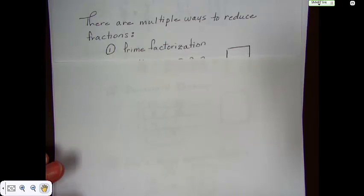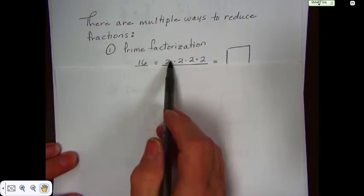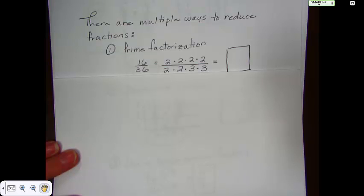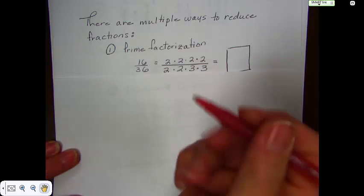Where you prime factor the numerator. For instance, 16 would be the numerator, 2 times 2 times 2 times 2. And then you prime factor the denominator, which in this case is 2 times 2 times 3 times 3, or 4 times 9 is 36. And then you eliminate the commons from the top and the bottom.